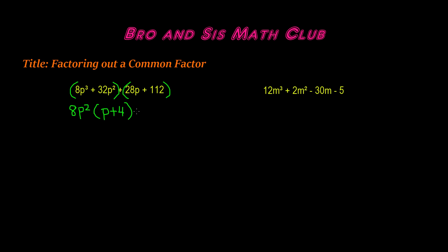Now we're going to keep that plus sign that we have in the middle, and find the GCF of 28p and 112. The GCF of 28p and 112 is 28. So this is a positive 28, and now we divide. We're left with p plus 4, because 112 divided by 28 is positive 4.